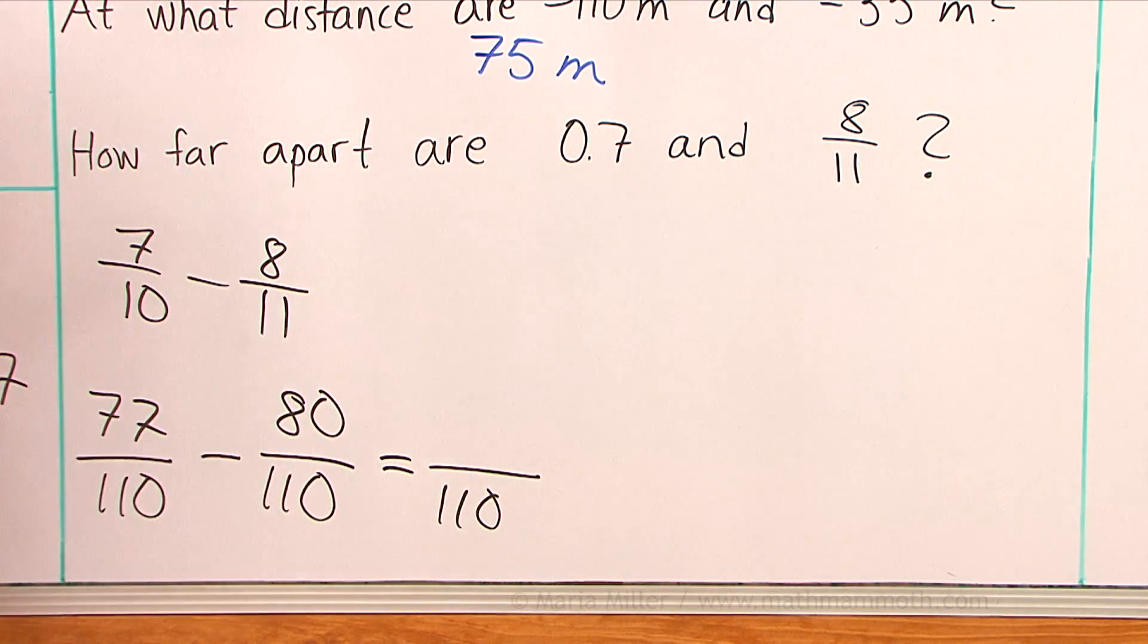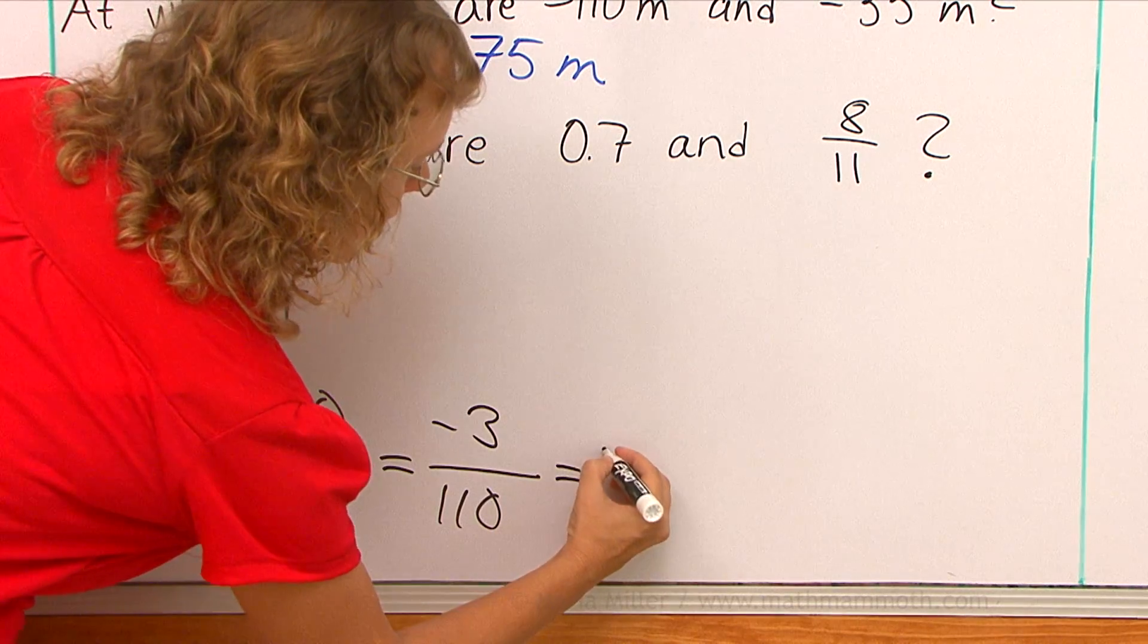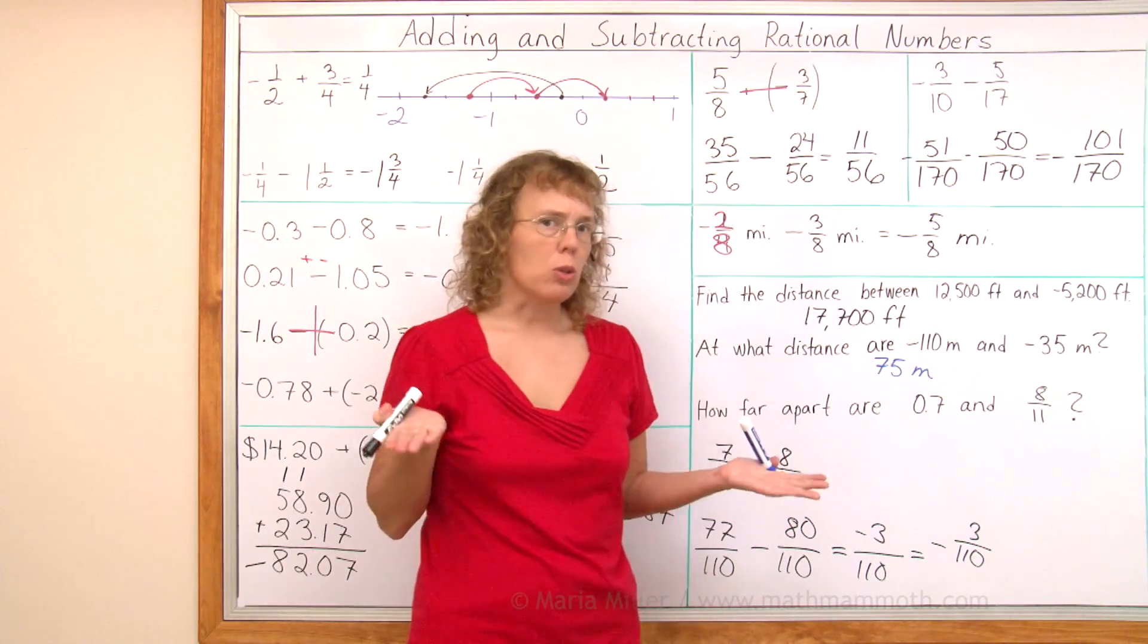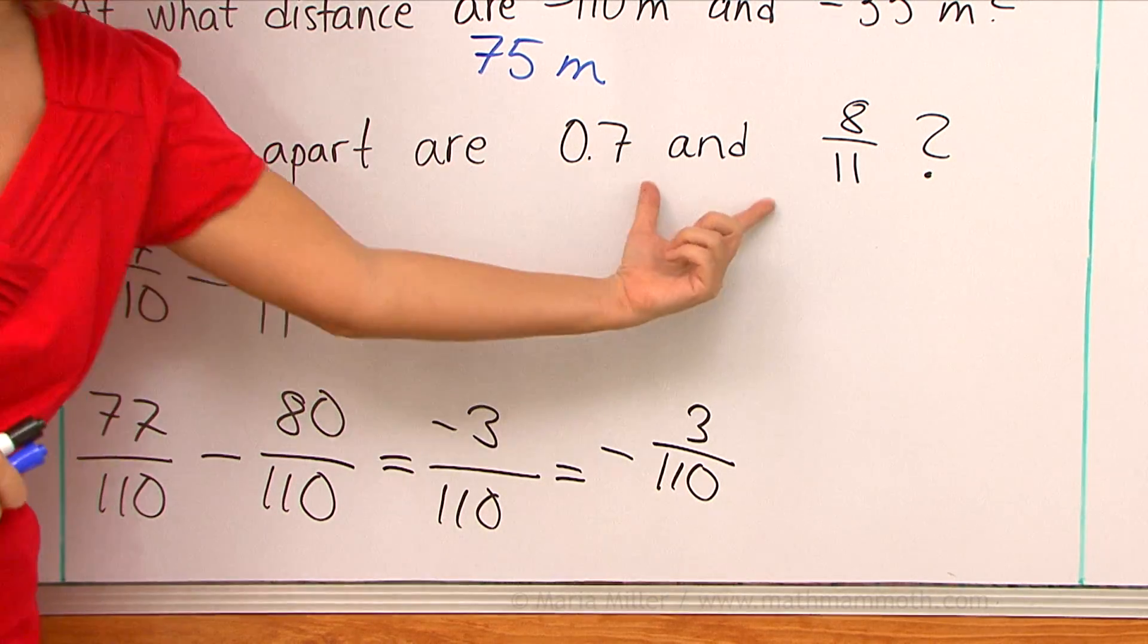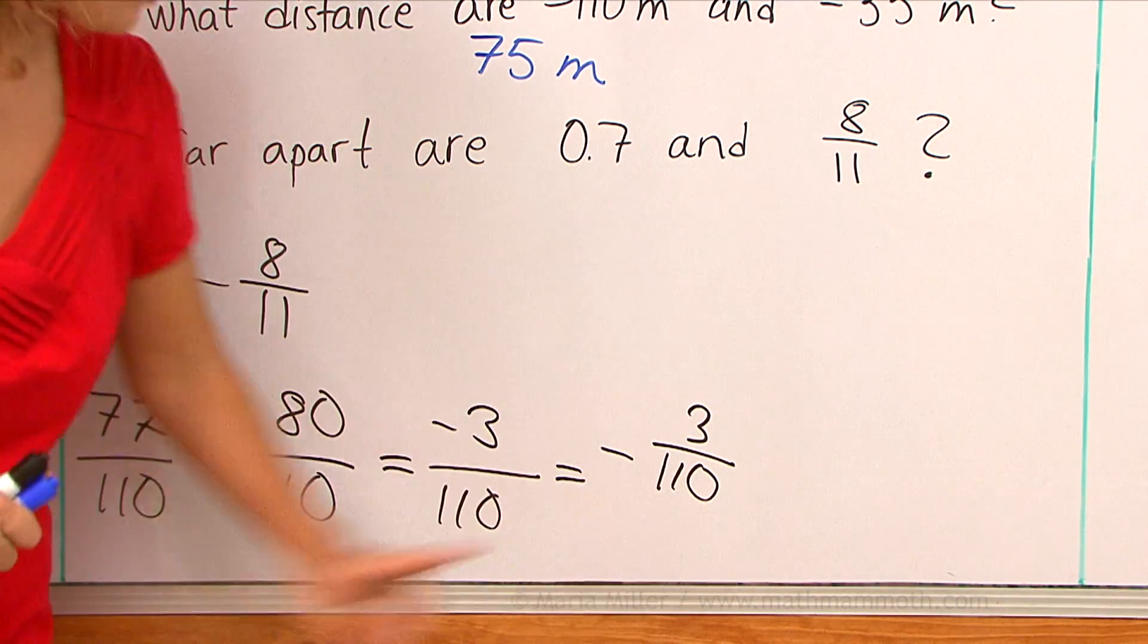We get a negative number here. Negative three over one-hundred ten, which is the same fraction as negative three over one-hundred ten, like that. So did something go wrong? How far apart are these two numbers? It's asking for a distance. Distance cannot be a negative number.